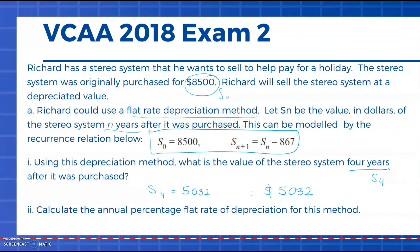Part two asks to calculate the annual percentage interest rate. In this case they want us to find the little r value for this particular method. In this question we've been given our value of D as 867, so we can use that formula we have for D where D = r/100 × V₀ to help us solve for that value of r. We know D is 867 and our initial value was $8,500, so when we solve for that we end up with r = 10.2 percent.